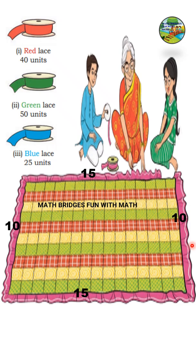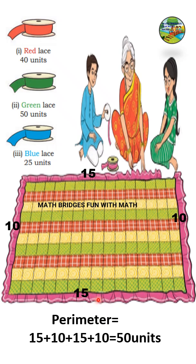The perimeter is the outer boundary of the given shape. Here, to find the perimeter you add all the sides: 10 plus 15 plus 10 plus 15, which equals 50 units. That means grandmother will take 50 units of green lace to put the border for this quilt.